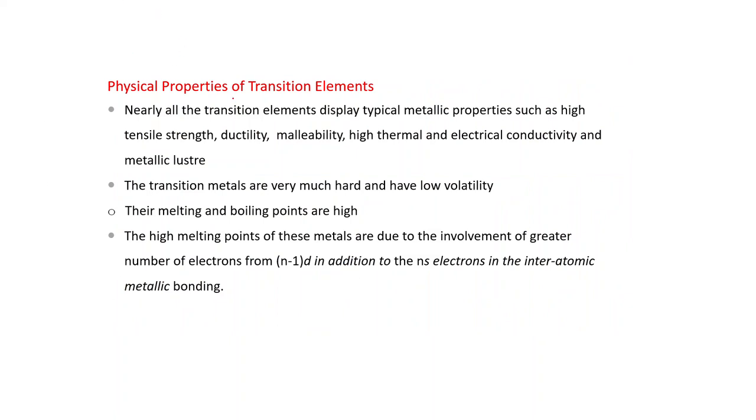Physical properties of transition elements. Nearly all the transition elements display typical metallic properties such as high tensile strength, ductility, malleability, high thermal and electrical conductivity and metallic luster. The transition metals are very hard and have low volatility. Low volatility means high melting point and boiling points. The high melting points of these metals are due to the involvement of greater number of electrons from (n-1)d in addition to the ns electrons in the interatomic metallic bonding. In metallic bonding, not only outermost shell electrons, that is ns electrons, even (n-1)d electrons also take part. More the involvement of number of electrons, more stronger the metallic bond.